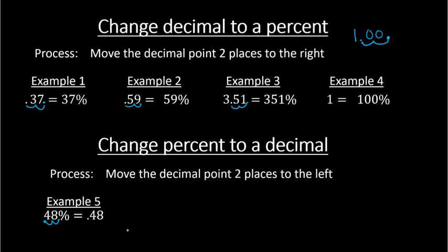Try the next examples. Example 6: we have 76%. What would this be as a decimal? If you said 0.76, you are correct. There's an assumed decimal point at the end of any number — it's not written. So it's right after the 6, and then we move it two places to the left, which gives us 0.76.